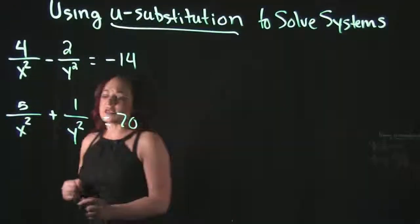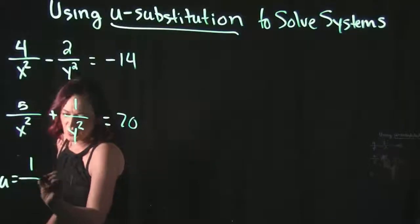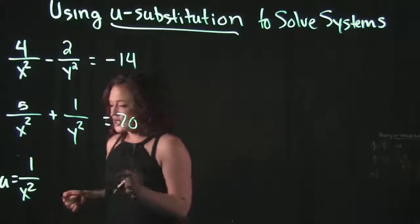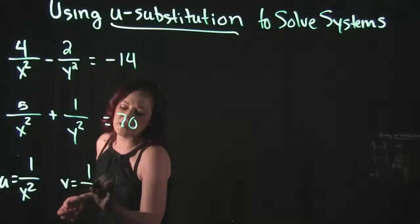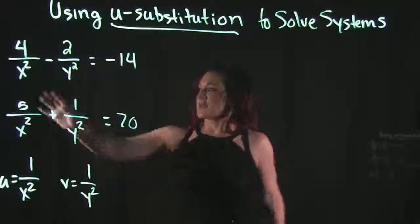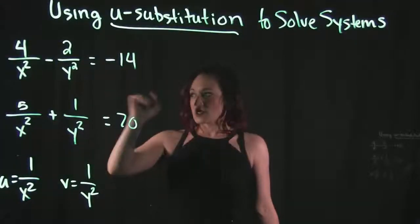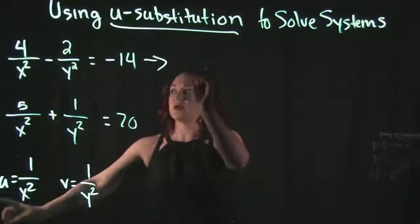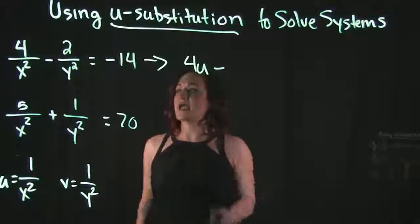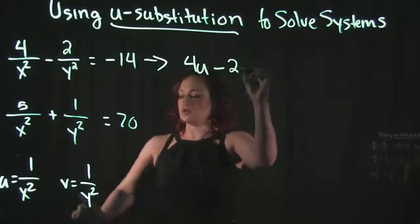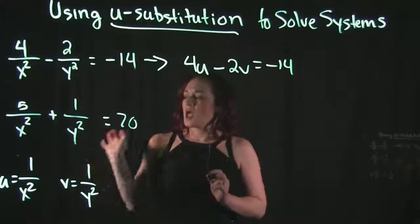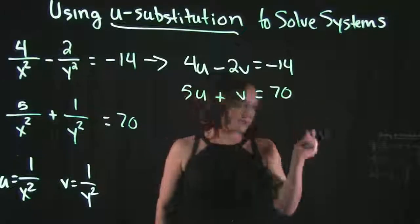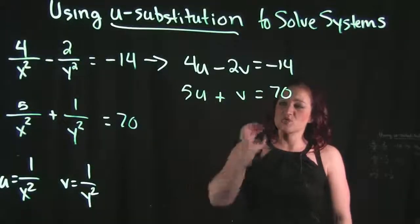We're going to say that u equals 1 over x squared, and v equals 1 over y squared, since we have both x squared and y squared in our system. With this substitution, the first equation becomes 4u minus 2v equals negative 14, and the bottom equation becomes 5u plus v equals 70. This new system is much prettier and more manageable to solve.